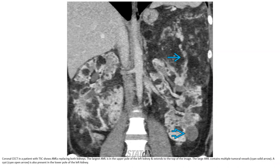Contrast-enhanced CT in a patient with tuberous sclerosis complex shows angiomyolipomas replacing both kidneys. The large angiomyolipoma is in the upper part of the left kidney and extends to the top of the abdomen. It contains multiple tumoral vessels. A cyst is also present in the lower part of the left kidney.